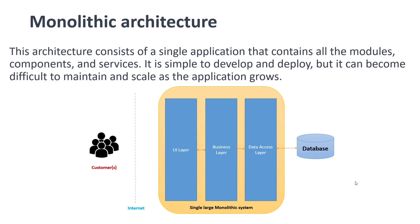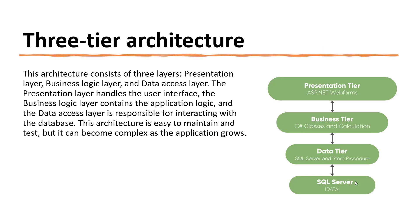So this is the monolithic architecture. You can see inside it here we have a customer, then the internet, and a single large monolithic system where the UI layer, business layer, and data access layer all exist inside that single large monolithic system. That is the monolithic architecture.